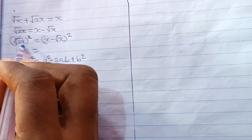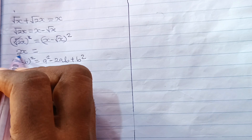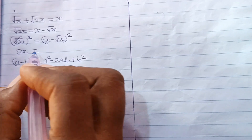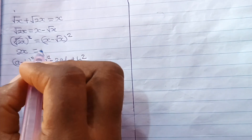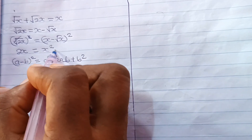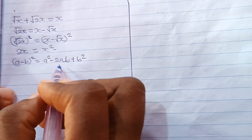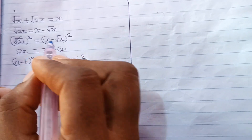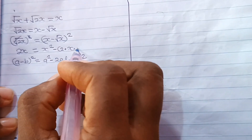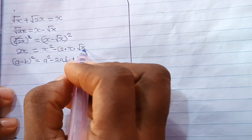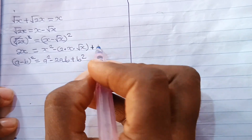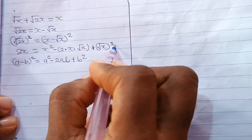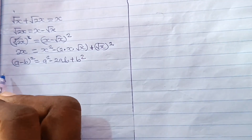So we can now write that 2x is equal to: a squared, that is x squared, minus 2ab, that is 2 multiplied by x multiplied by root x, then plus b squared, that is plus root x squared.